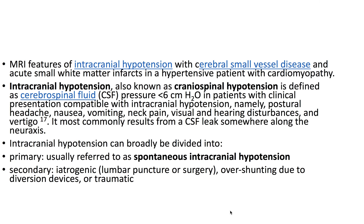Intracranial hypotension can broadly be divided into primary, which is usually referred to as spontaneous intracranial hypotension, and secondary, which is iatrogenic — it could be secondary to a lumbar puncture or surgery, or over-shunting due to diversion devices, or traumatic.